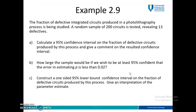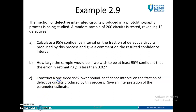Now we go to question C: construct a one-sided 95% lower bound confidence interval. You can see here: one-sided, 95%, lower bound. When they say one-sided lower bound, you can see from the curve that the lower bound will be at your left side. This is one-sided, so your alpha should not be divided by 2. That's why alpha becomes 0.05 only.